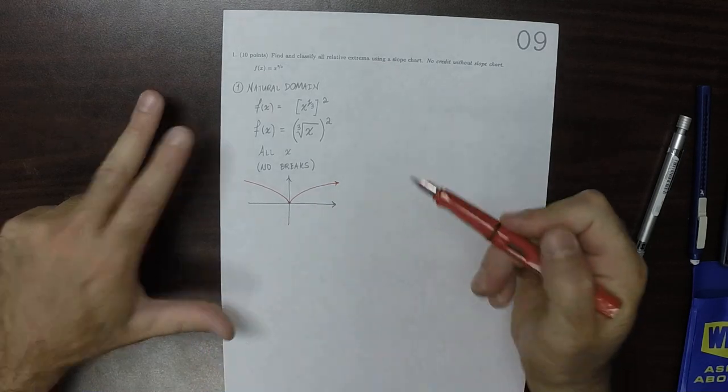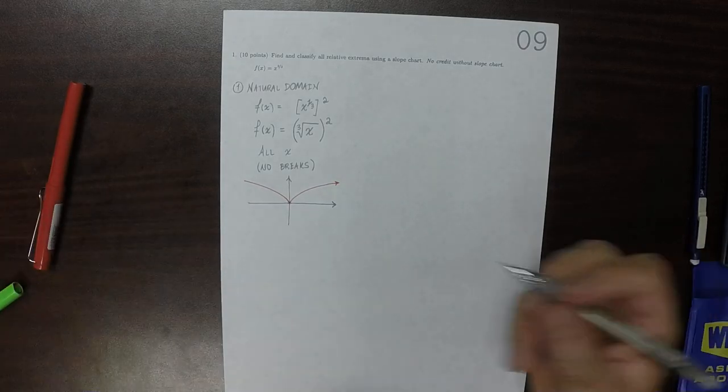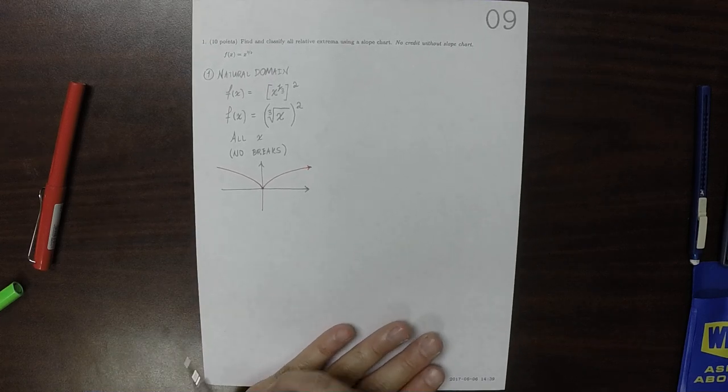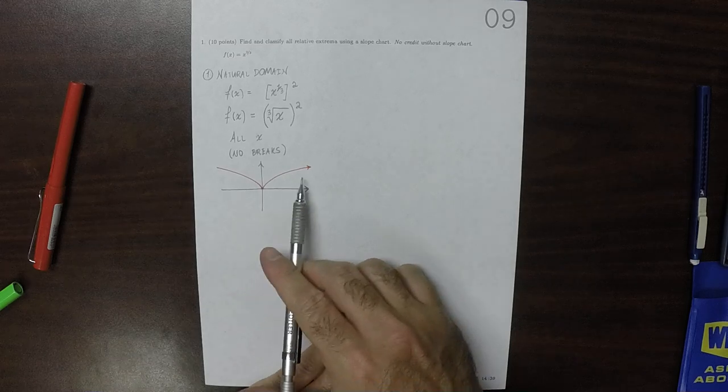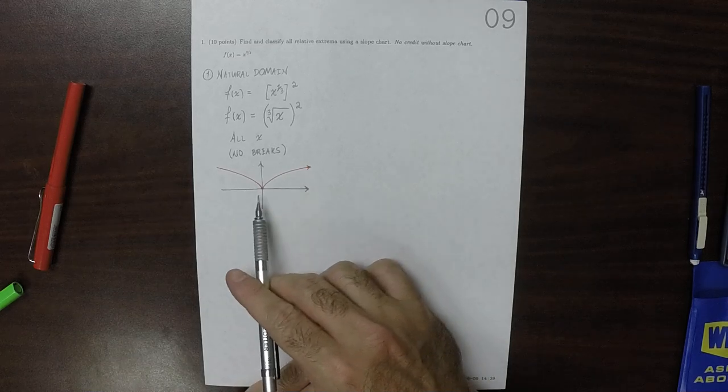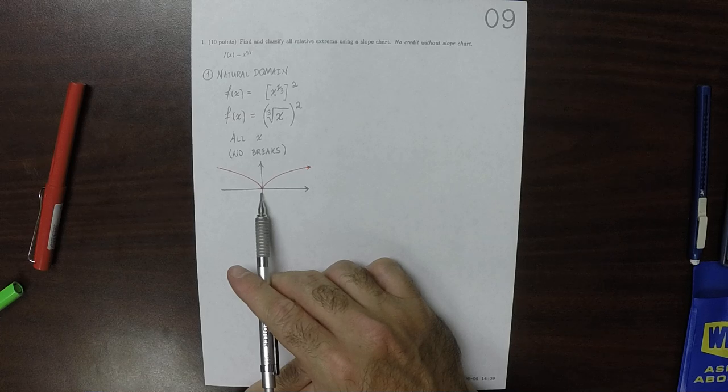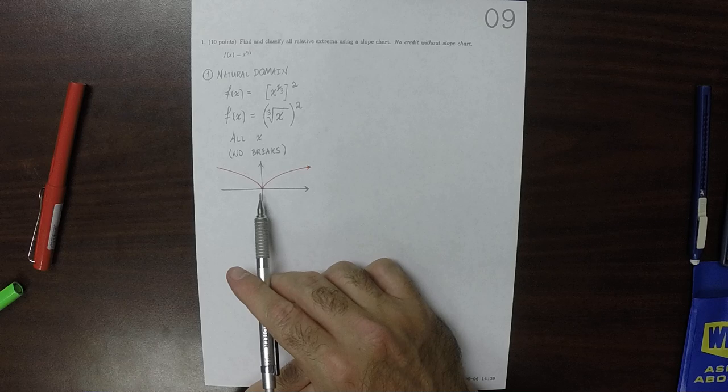And since you now know what it looks like, you should be able to anticipate what the slope chart's going to look like. It's got to be decreasing on this part, and then increasing on this part. And in particular, that's pointy at the origin, so you should have the expectation that the derivative will not exist there.